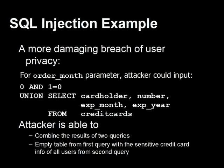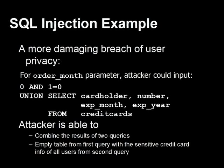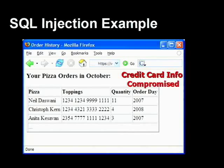The key thing is that the columns — cardholder, number, expiration month, expiration year — were chosen to exactly match the data types of the columns in the preceding order history table, which is why the SQL query works. Once the bad guy does this, they get a result page containing people's names, credit card numbers, et cetera. Note that in that query there were no quotes, no semicolons, no meta-characters, yet the attack worked.